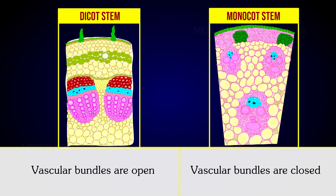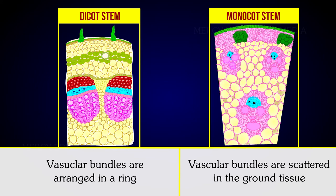The vascular bundles are closed in monocot stems. In dicot stems, the vascular bundles are arranged in a ring. In monocot stems, vascular bundles are scattered into the ground tissue.